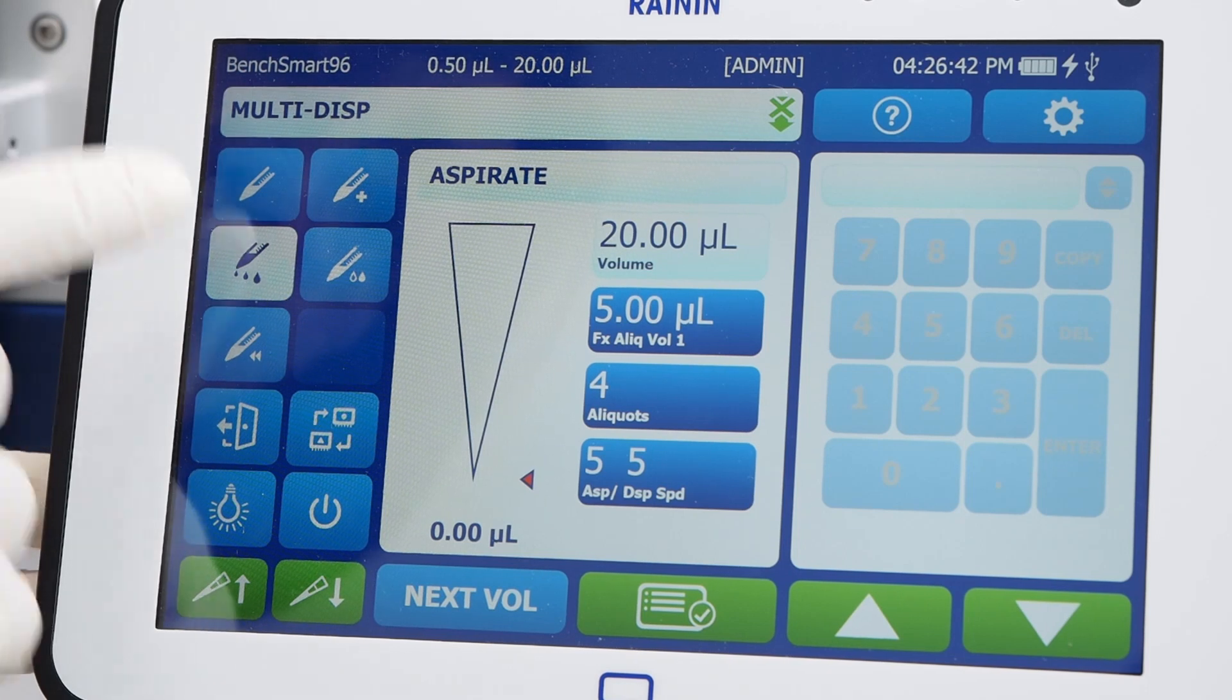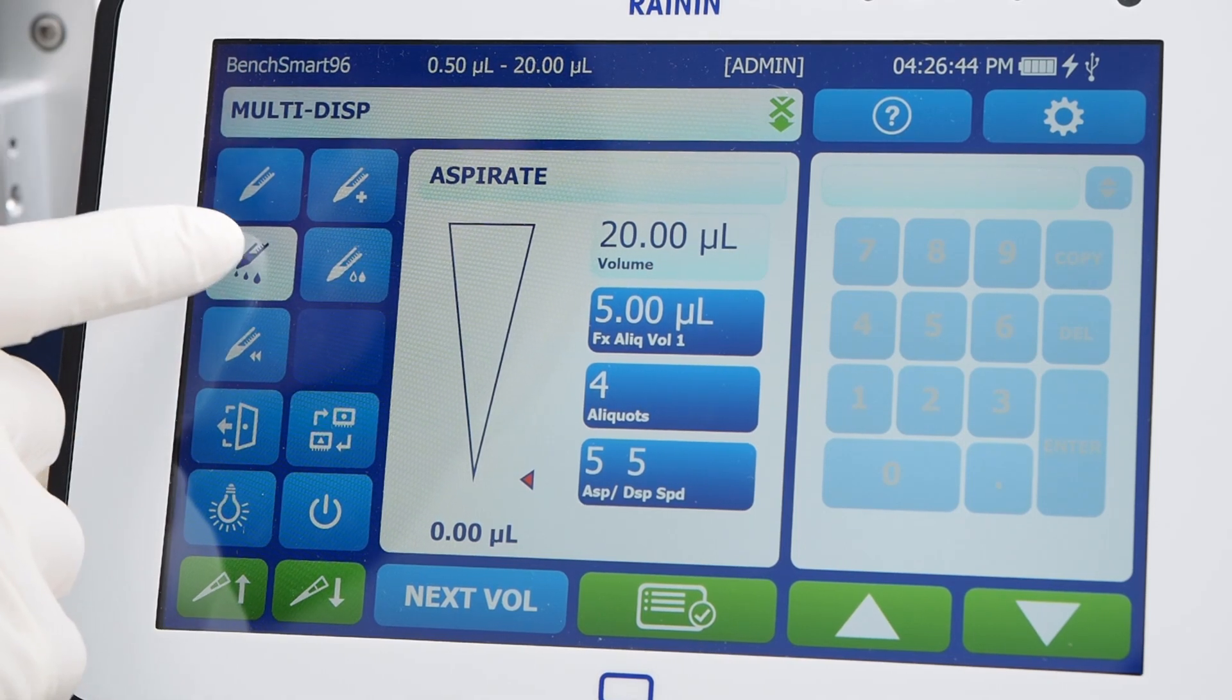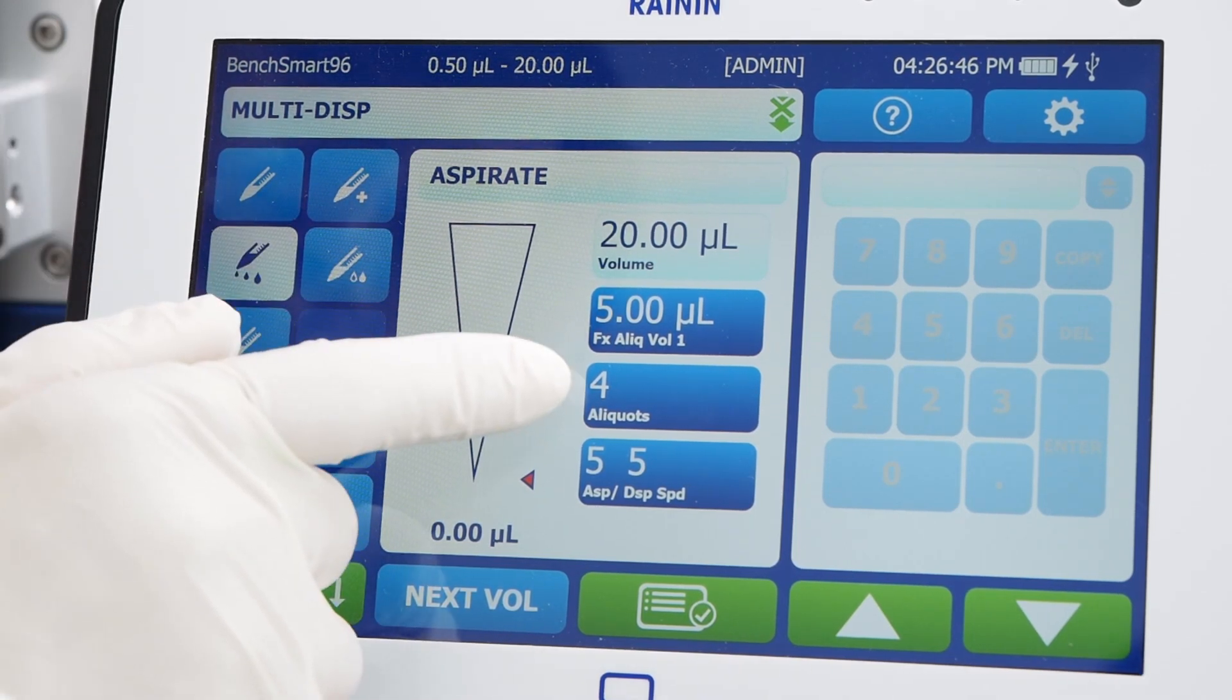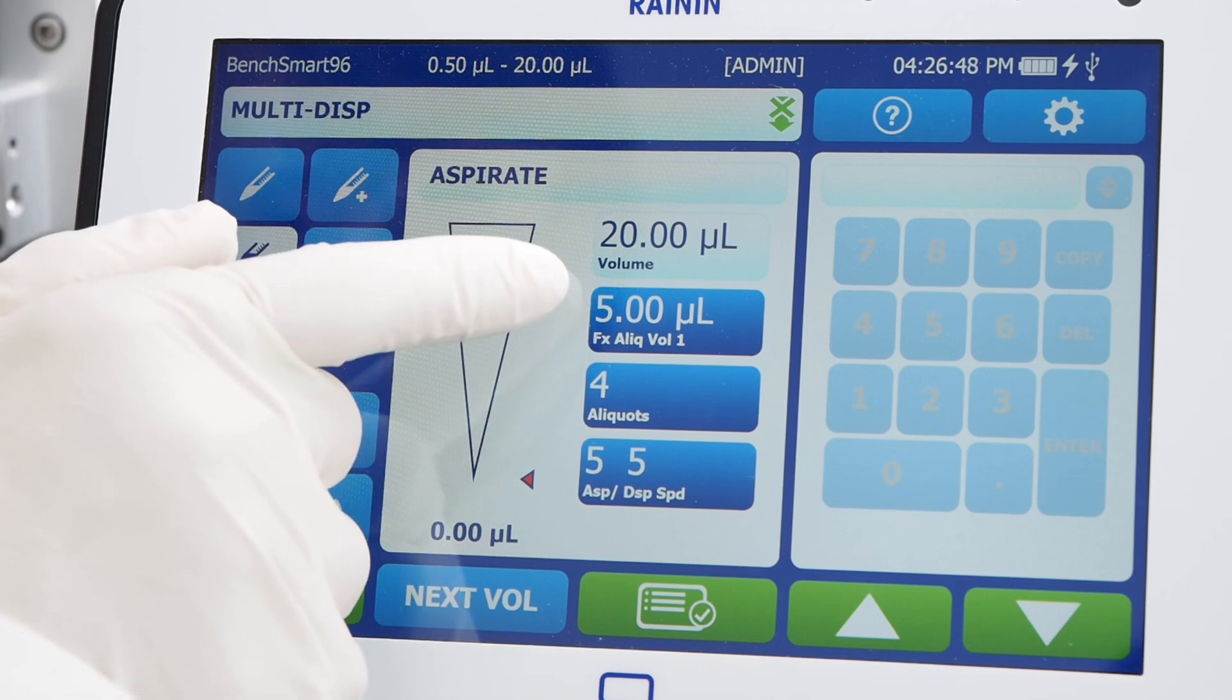BenchSmart is set in multi-dispense mode using 20 microliter tips. We'll dispense four aliquots, five microliters each.